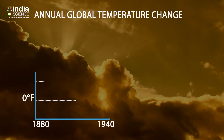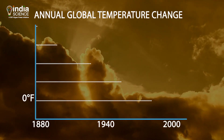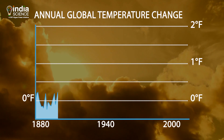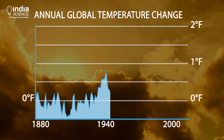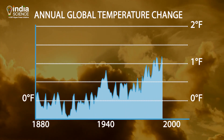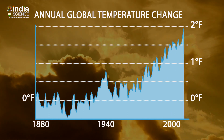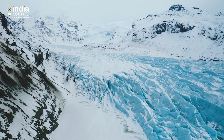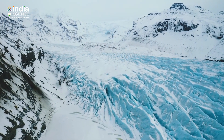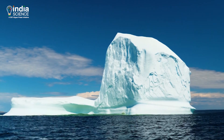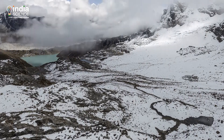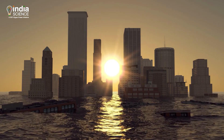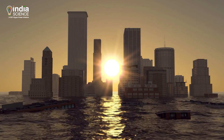Now let us look at this graph. It shows the change in temperature from the 1800s. The average global temperature of the Earth was minus 0.2 degrees Fahrenheit in the 1800s, but it started to rise very fast in the 20th century. So why is this a problem? If this change continues, then by the year 2100, the glaciers will melt drastically, including two-thirds of the Himalayan glaciers. The sea level will rise by 1 to 8 feet, which means hundreds of coastal cities will vanish.